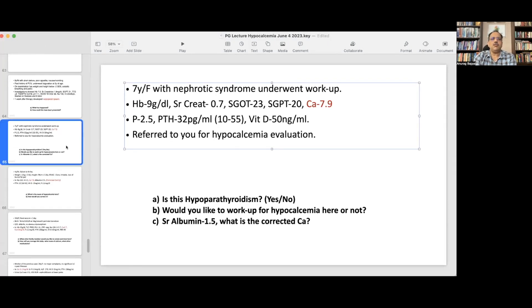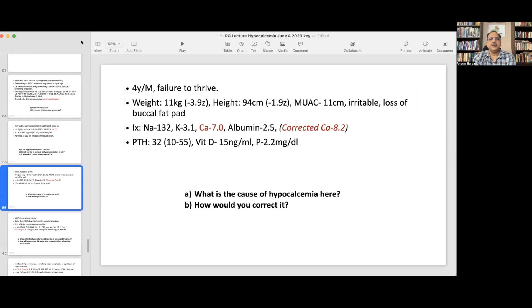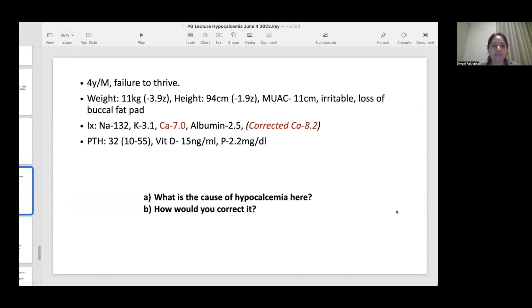The third scenario: we have a four-year-old boy with failure to thrive. The weight is minus 3.9 Z-scores, the height is at minus 1.9, the mid arm circumference is low. The child is irritable, has a loss of buccal fat pad. The corrected calcium is also on the lower side, 8.2. The doctor went ahead with investigation. PTH is 32, vitamin D levels are extremely low, phosphorus is again on the lower side. What is the cause of hypocalcemia here and how would you go to correct it, knowing this child is not acutely symptomatic at present?